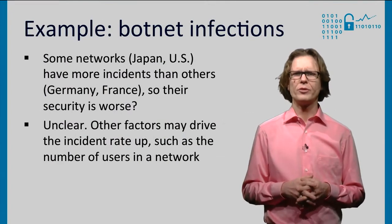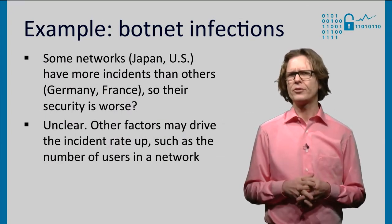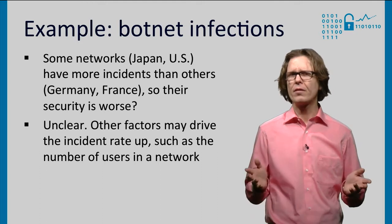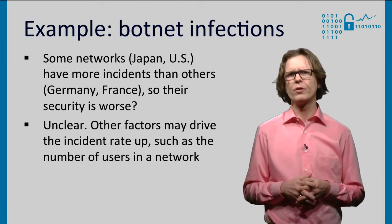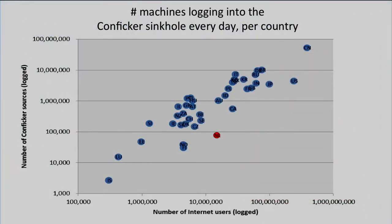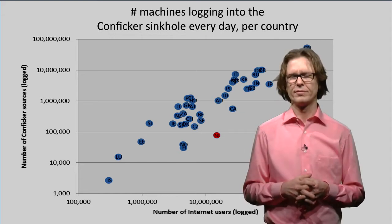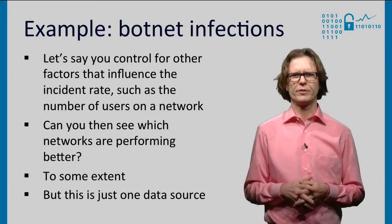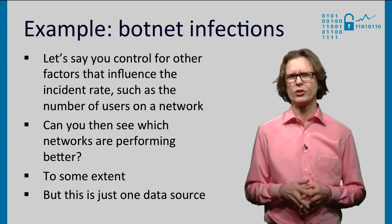So the rank metric would tell you that some countries have more infections than others. Does that mean their security is worse? Not really — there are many other factors that might drive up their incident rates, factors that have nothing to do with security. An obvious one is the number of users in the network. Indeed, if we plot the number of infected machines in each country on the vertical axis against the number of users in that country on the horizontal axis, you see a clear linear relationship — the more internet users in the country, the more infections. That doesn't mean its security policies are worse. If you know that a certain factor drives the incident rate, you can try to control for it — you could, for example, divide the number of infections by the number of users.